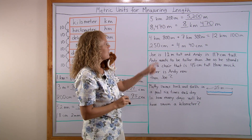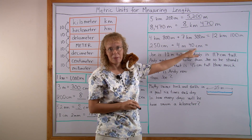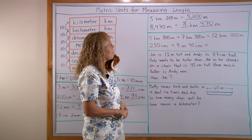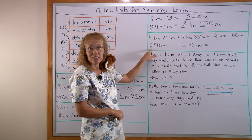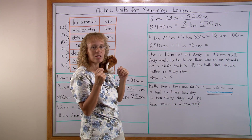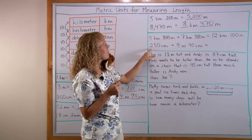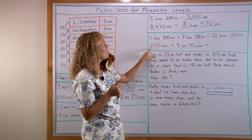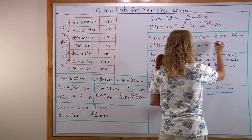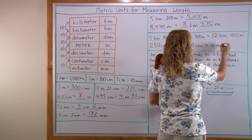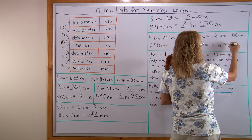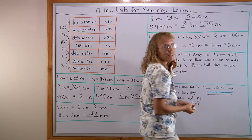Here we have centimeters, meters, and centimeters. You may want to change everything to meters and centimeters. There are 2 meters here — 200 centimeters makes 2 meters — so here's 2 meters and 50 centimeters. Adding 2 meters and 4 meters gives 6 meters, and then the 50 and 40 centimeters is 90 centimeters. It's not very difficult.